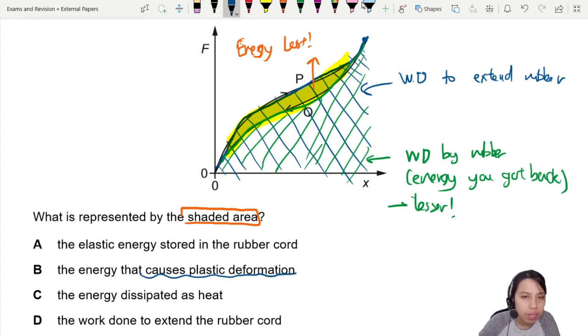Energy that causes plastic deformation? How do we know if it's plastic deformation or not? Not exactly. This is not plastic deformation. How do you know? It returns to no extension. So that's not plastic deformation - it is elastic. Rubber band is elastic.